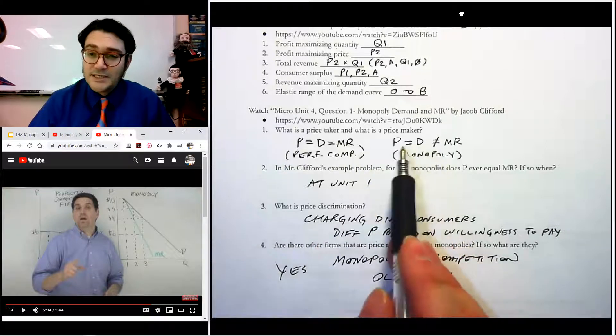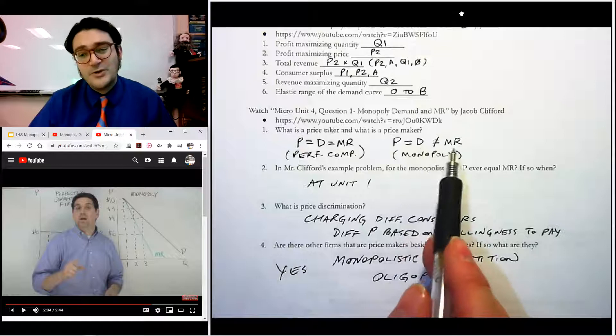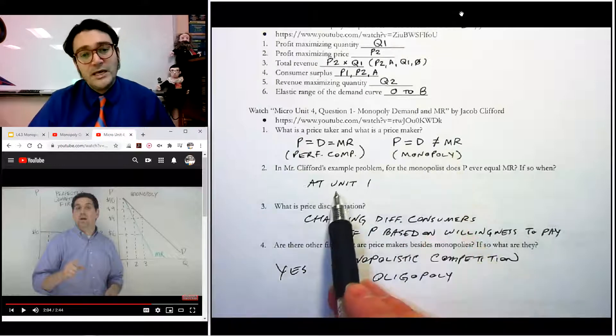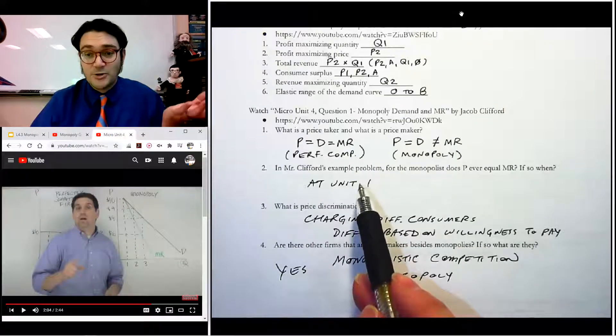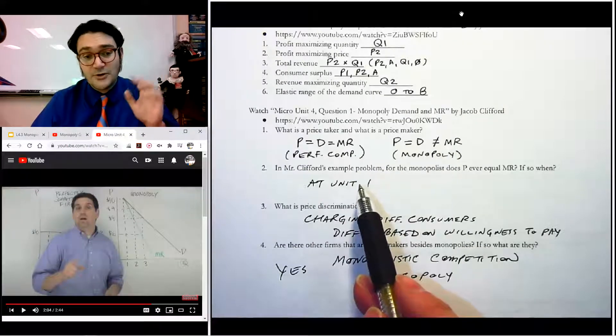Whereas a price maker has a scenario where the price is on the demand curve, but it no longer equals marginal revenue. Now in his example problem and for all of these monopolists, their price equals marginal revenue for the very first unit that they sell, quantity one.